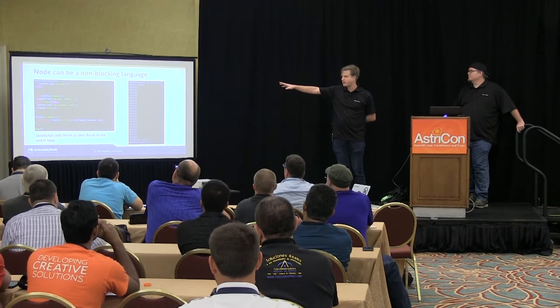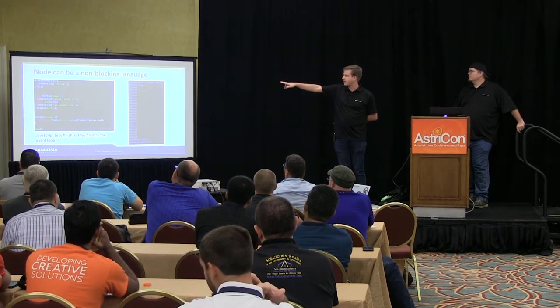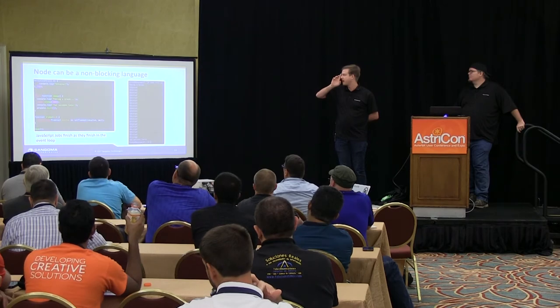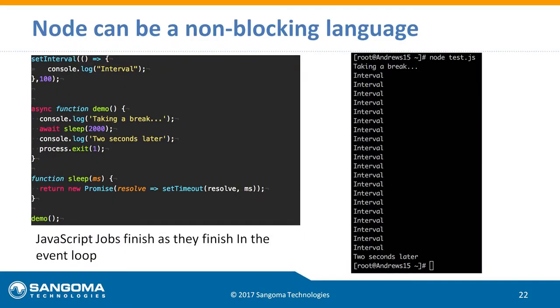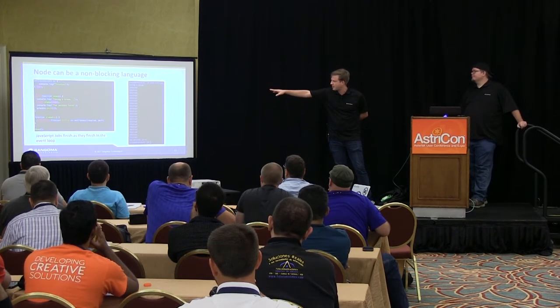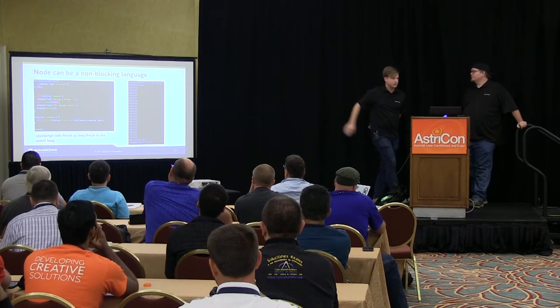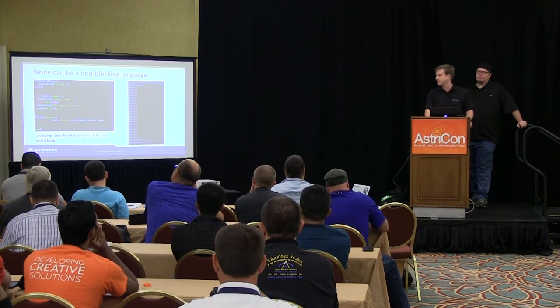In Node, you can get around that kind of situation because we use set interval, which is just like that while loop. So I'm doing set interval, console.log interval, every 100 milliseconds. But you can see I actually reach 'taking a break', and then I have another sleep here because async and await are synchronous functions in Node in the newer versions. They're basically promises. So I can get 'taking a break' and I'm still running the interval, and then two seconds later I hit that process exit. There's no blocking in this situation, which is really important in dial plan applications.